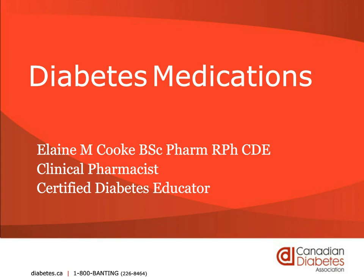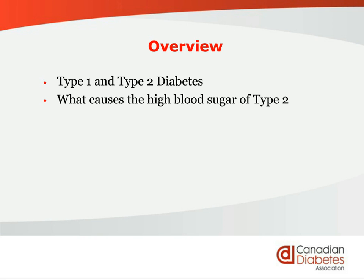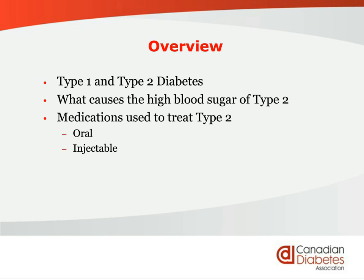Good evening everyone, or good afternoon if you're on the West Coast. We're going to cover the differences between type 1 and type 2 diabetes, what causes the high blood sugar of type 2, and go over the medications used to treat type 2 diabetes — the oral medications, the injectable medications, and insulin — and then a little bit of information about hypoglycemia.